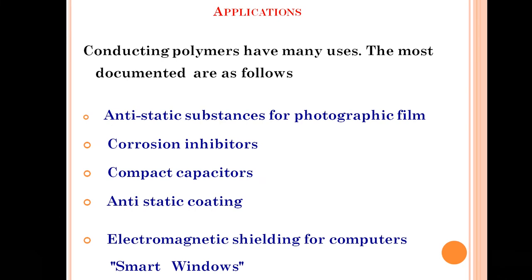Coming to the applications of conducting polymers — conducting polymers have many uses. They are used as anti-static substances for photographic film, as corrosion inhibitors, and in capacitors, especially compact capacitors. They are also used for anti-static coating purposes, for electromagnetic shielding for computers, and in smart windows.